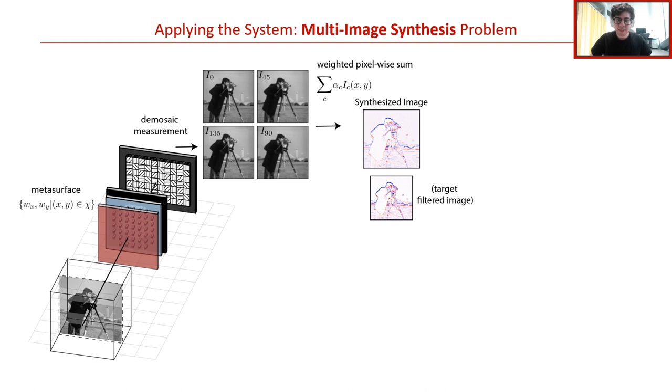Given an understanding of the system and how to optimize the metasurface, we now want to demonstrate its usage by applying it to a new task introduced in this paper called multi-image synthesis. An overview of this design problem in its simplest form is depicted here. Given a scene, we desire an arrangement of nanofins on the metasurface which will produce some polarization encoded intensity pattern at the photosensor. This intensity is then measured with the polarizer mosaic pixels and is digitally demosaicked to obtain a set of four distinctly coded images: I0, I45, I90, and I135, all obtained in single exposure. We then compute only the linear, pixel-wise sum of the four images with some learnable scalar weights alpha in order to obtain a new synthesized image. This synthesized image can then approximate a spatial, frequency-filtered rendering of the scene using only a minimum of six floating-point operations per pixel, regardless of the filtering kernel.